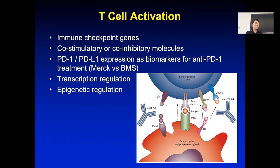At that time, Merck decided to do the trial using PD-L1 as a marker — if PD-L1 is high, they would give the patient immunotherapy. But BMS decided they did not want to have a biomarker. When they did the trial, both passed the endpoint and both were effective, so FDA approved both. However, in the clinic, when doctors have to check whether PD-L1 expression is high, it takes additional time and experimentation. So a lot of doctors just didn't want to go through the trouble and would simply prescribe BMS PD-1.